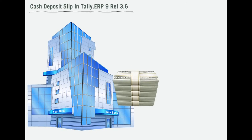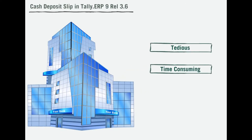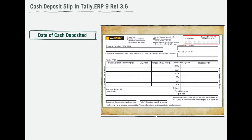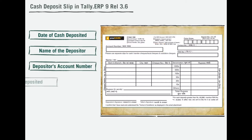A cash deposit slip is a small form used to deposit money into your account. Depositing cash in the bank has always been tedious and time-consuming. It specifies details such as the date on which cash is deposited, name of the depositor, depositor's account number, amount deposited, etc.